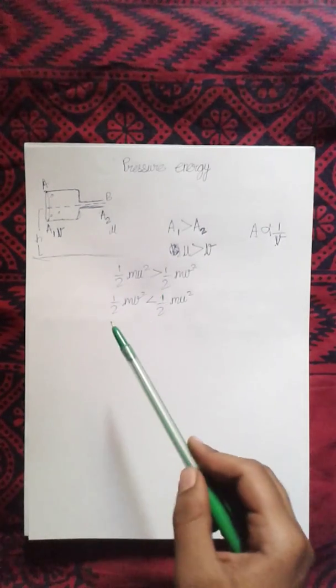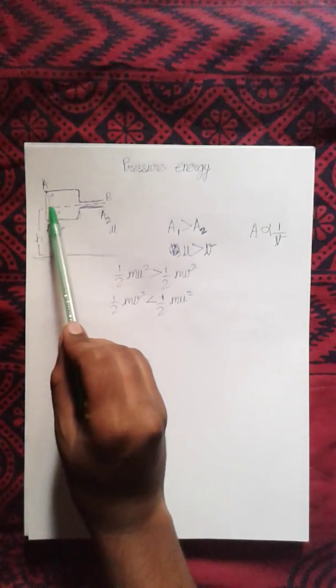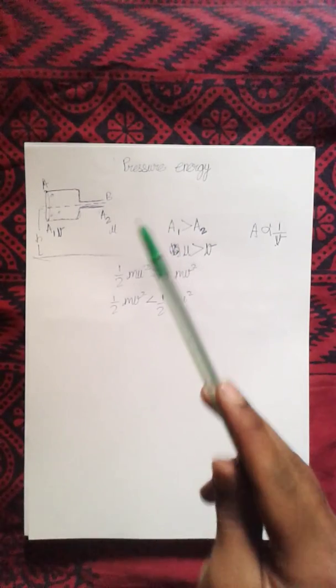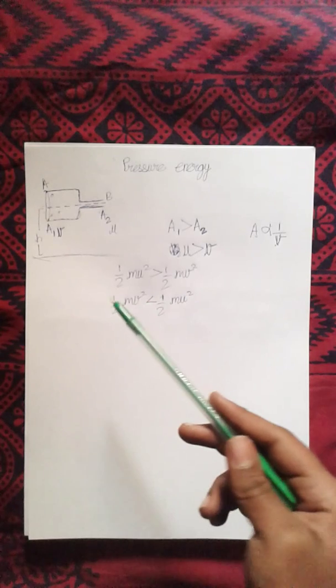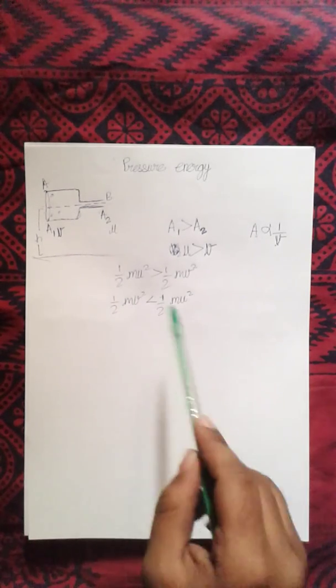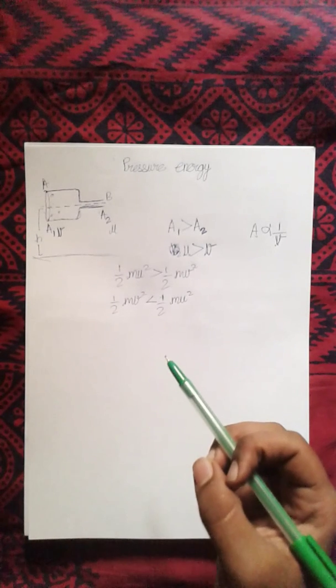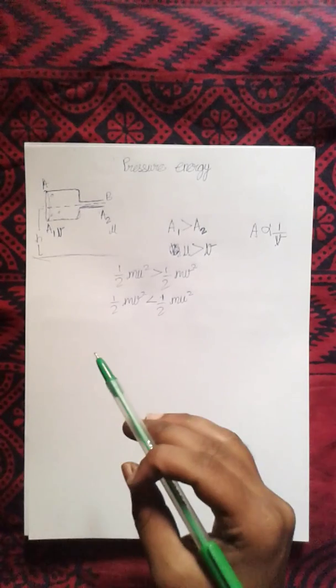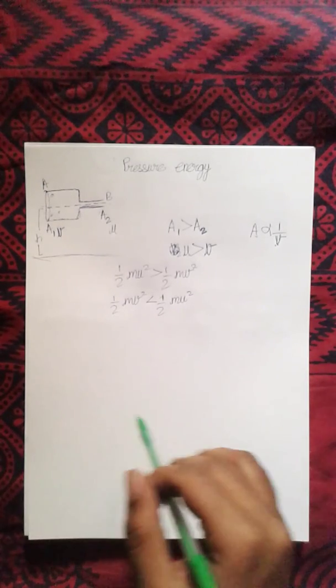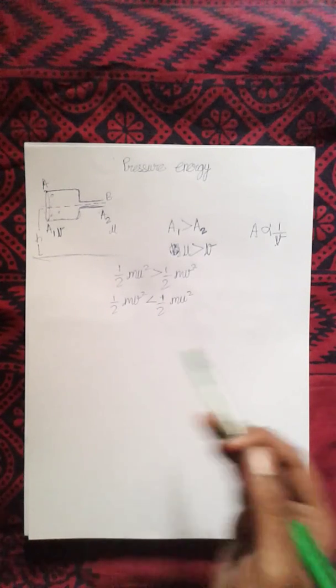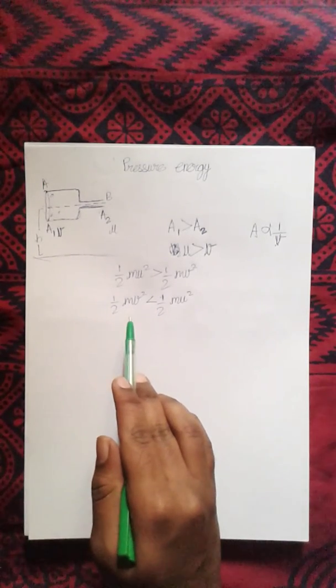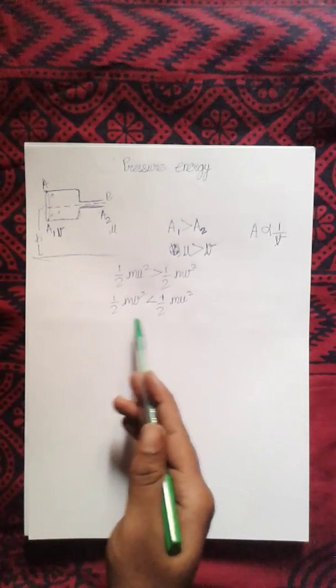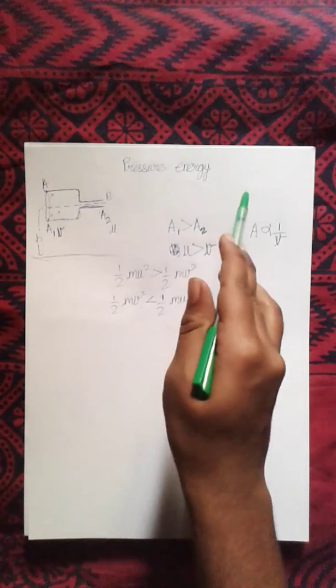And if we see the gravitational potential energy, due to the same height at all levels there is no difference in gravitational potential energy. So there is energy lost here, but according to law of conservation of energy, energy can neither be obtained or destroyed. It can never be destroyed, so where does this energy go? Actually this energy remains with the molecule in the form of pressure energy.